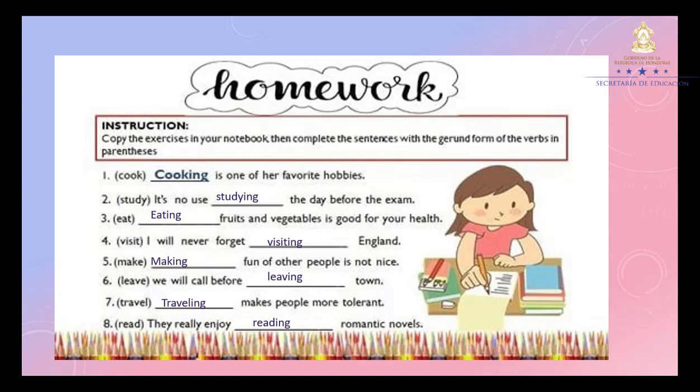Number five: Making fun of other people is not nice. Number six: We will call before leaving town. Number seven: Traveling makes people more tolerant. And number eight: They really enjoy reading romantic novels. So if you have your homework like this, it is correct. Good job, guys.